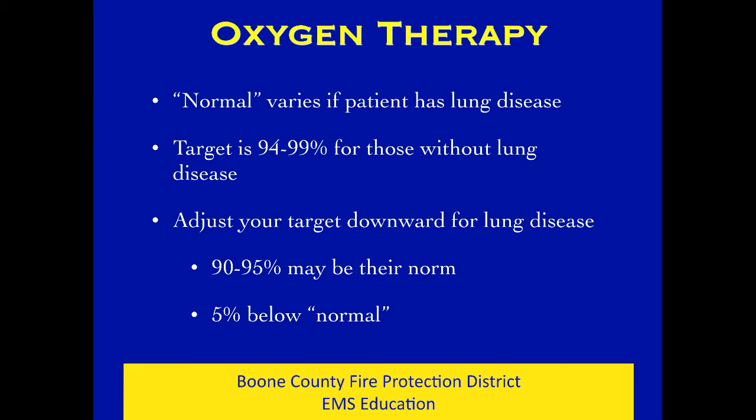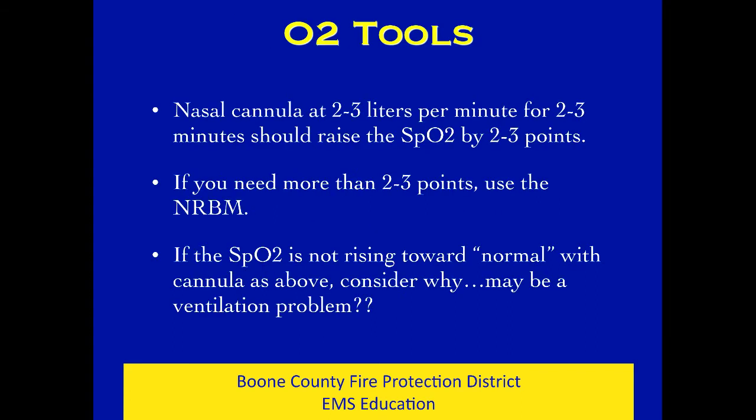If they have lung disease, we need to adjust their normal down a little bit. We don't need to put a non-rebreather on everybody - that's outdated thinking. If they have lung disease, adjust their normal down about five percent, so instead of 95%, maybe the low 90s or even upper 80s for some patients. Use a little oxygen for a couple of minutes - two or three liters for two or three minutes ought to get two or three points increase on the pulse ox. If you don't get that, there may be a ventilation problem.